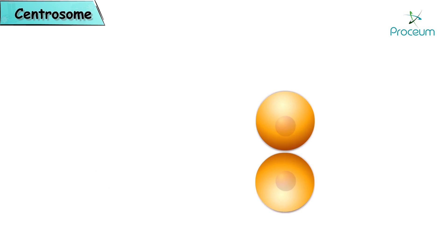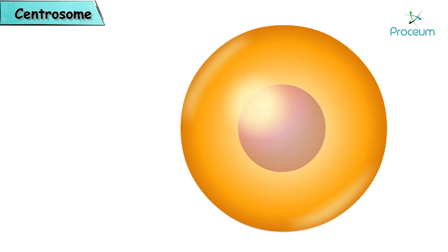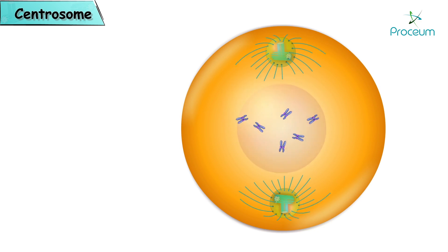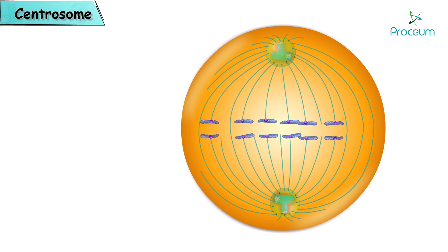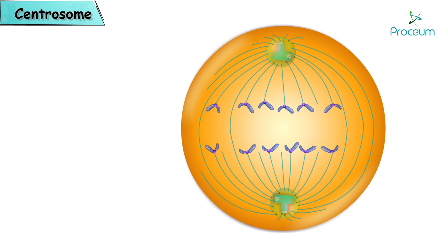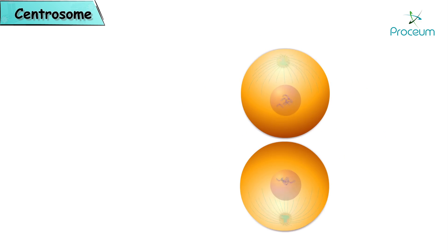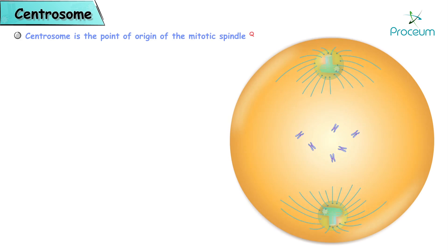When a cell divides, the centrosomes duplicate themselves and the pairs move apart to the poles of the mitotic spindle, where they monitor the steps in cell division. The centrosome is the point of origin of the mitotic spindle.